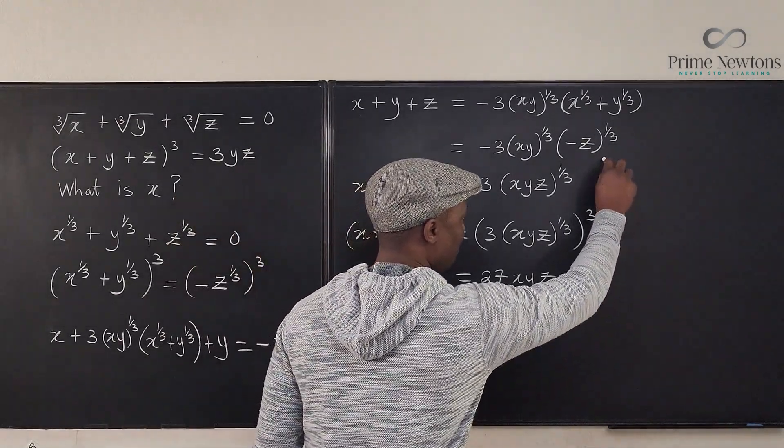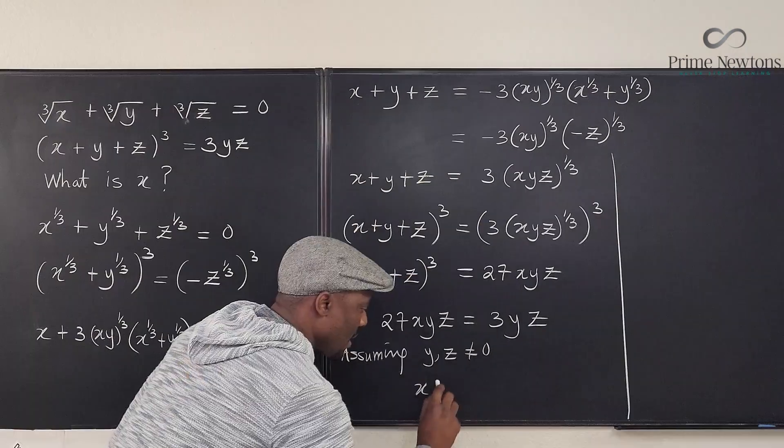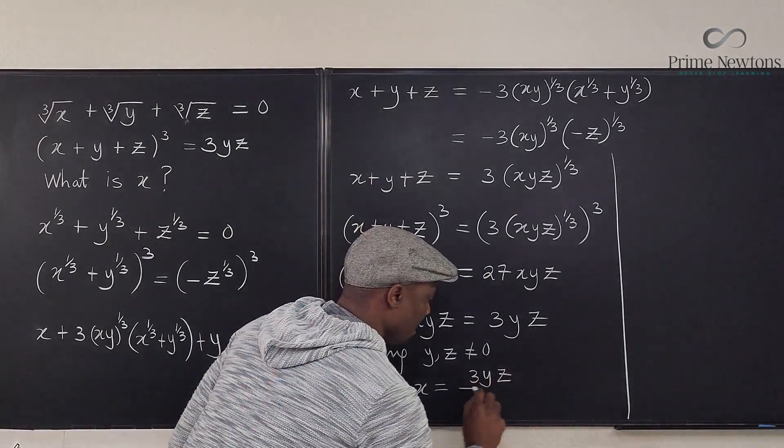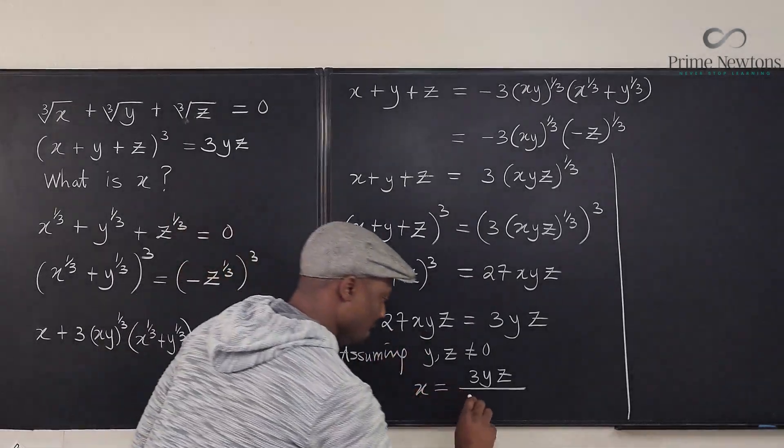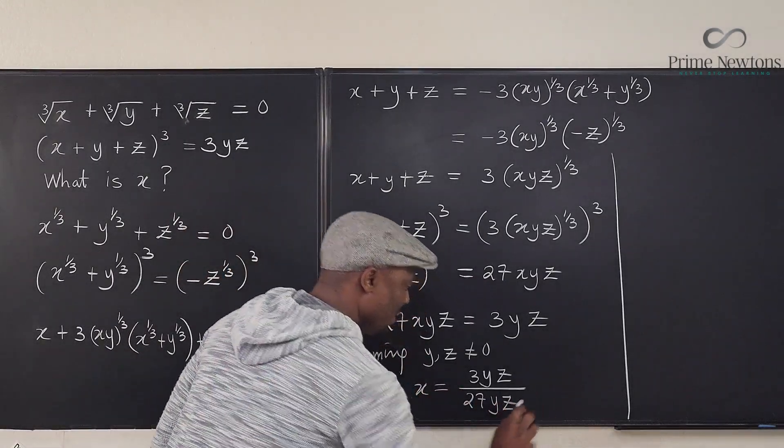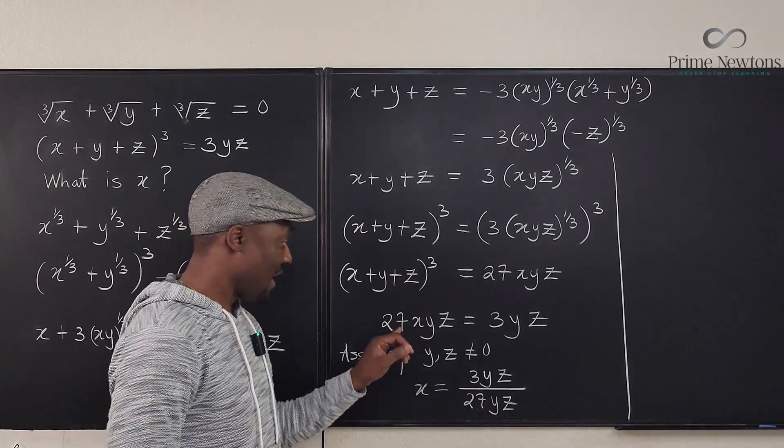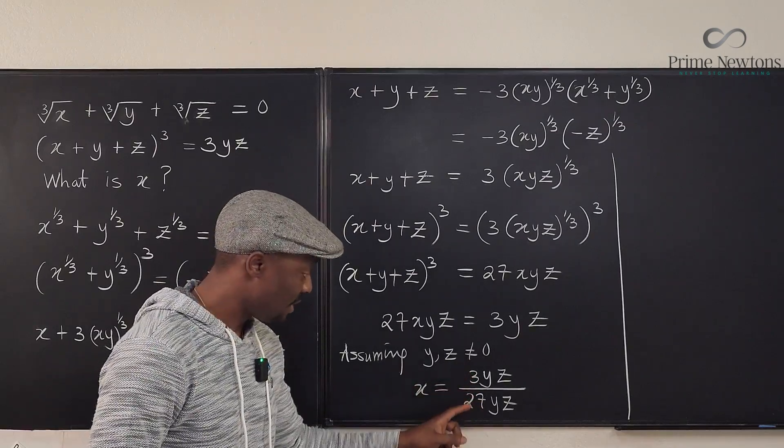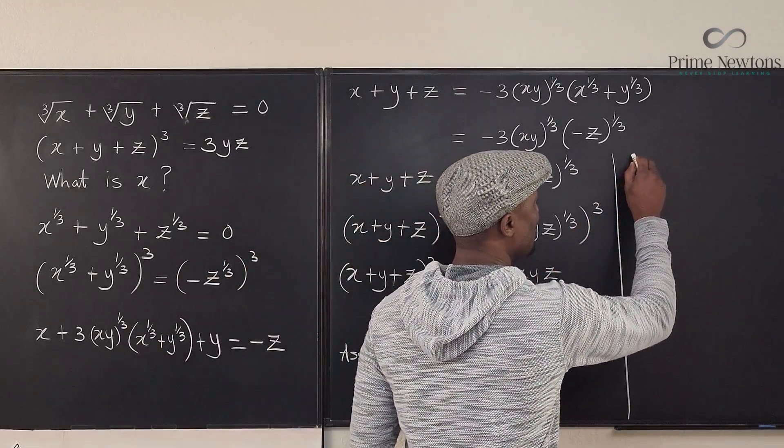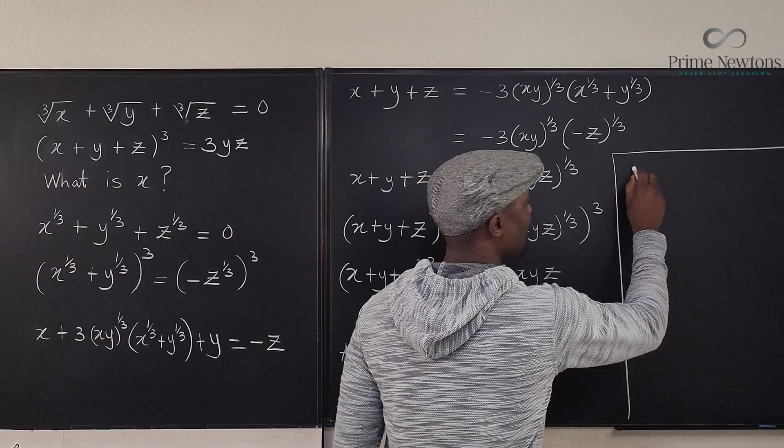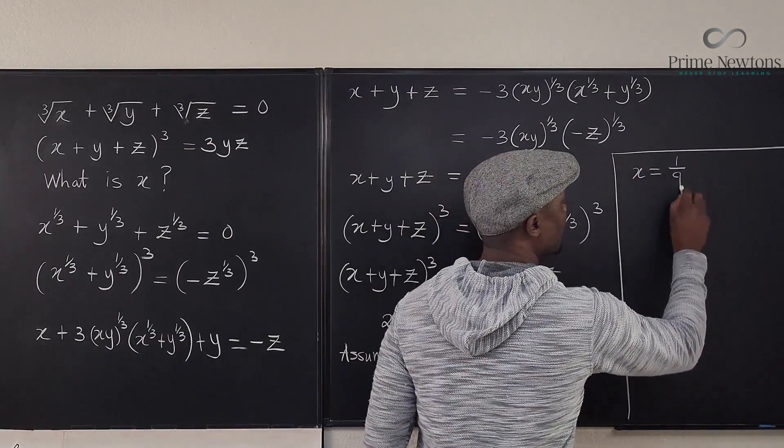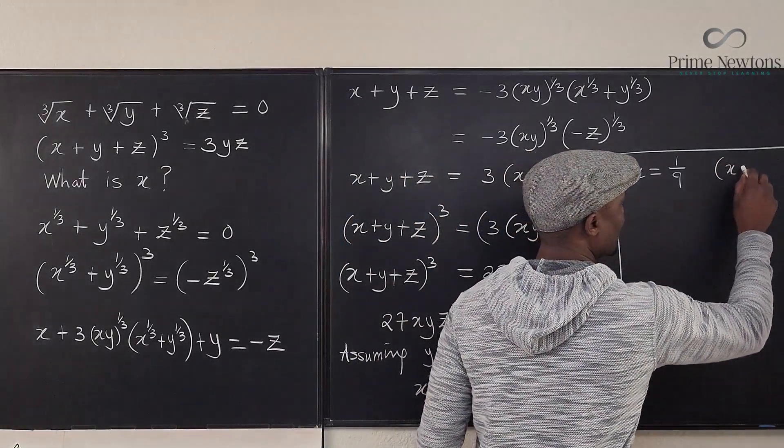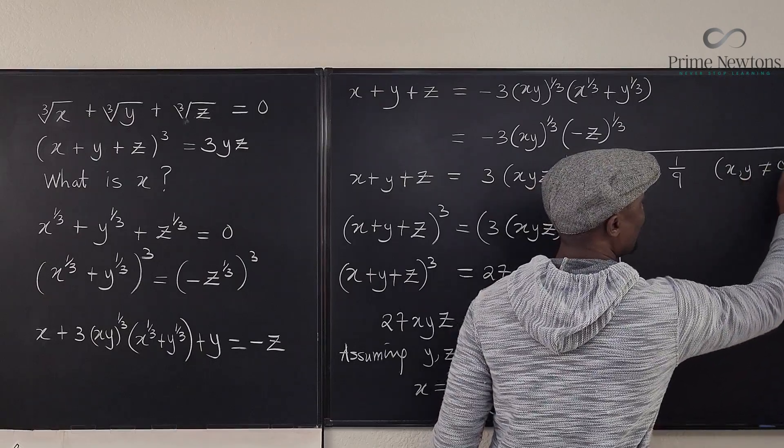Then I have, I'm going to go here and finish it. Then I have x will be equal to 3yz divided by 27yz. 27yz. So now remember the condition that if neither of y nor z is equal to zero, our answer is going to be one over nine, right? Three and 27 is one over nine. So we've got case one. Let's seal this up. We have x is equal to one over nine when x or y is not equal to zero. Let's put all the conditions x, y not equal to zero. Nice.